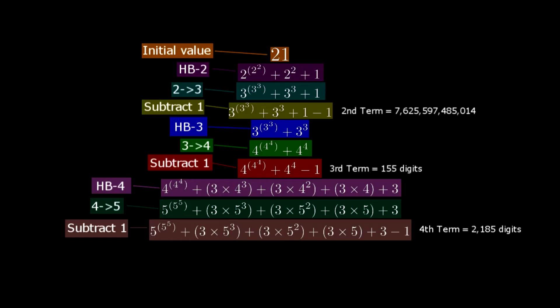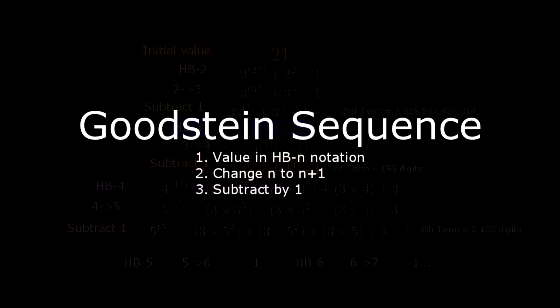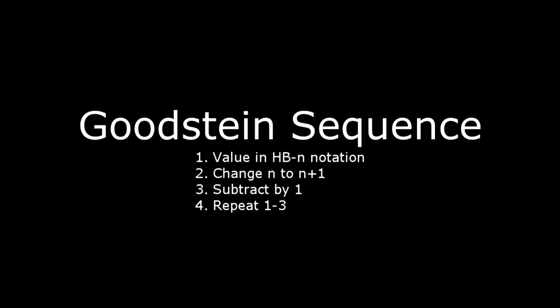Then write this value in hereditary base 5 notation, and so on. The next term of a Goodstein sequence is found by writing the current value in hereditary base n notation, starting at n equals 2, changing every n to n plus 1, subtracting 1, and continuing this pattern until you reach 0.